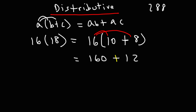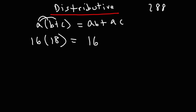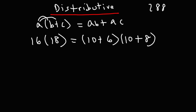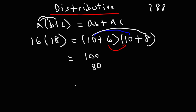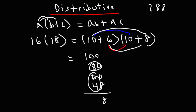Another way to do this problem: write 16 as 10 plus 6 and 18 as 10 plus 8, then use the FOIL method. 10 times 10 is 100, 10 times 8 is 80, 6 times 10 is 60, and 6 times 8 is 48. Adding the ones column: 8. Second column: 6 plus 4 is 10, plus 8 gives 18 — carry the 1. This gives us 288 as well. So that's another way to get the same answer using the distributive property.